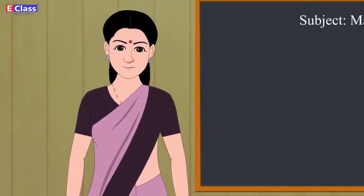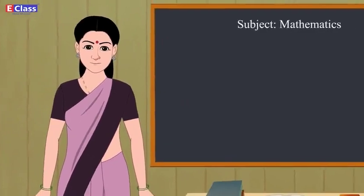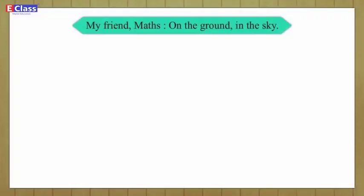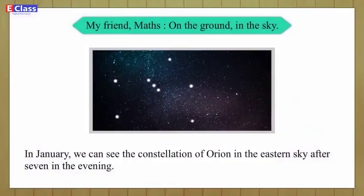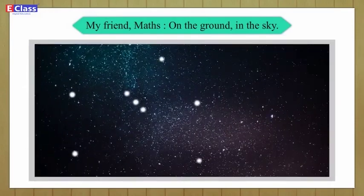Dear friends, do you know we use maths in our daily life? Maths on the ground: observe the picture of a game being played — identify the collinear players, non-collinear players, parallel lines, and the plane. Maths in the sky: in January, we can see the constellation of Orion in the eastern sky after seven in the evening. Can you see the three collinear stars in the constellation? Do you also see a bright star on the same line some distance away?